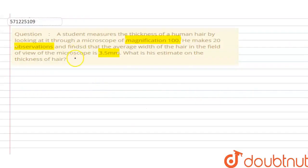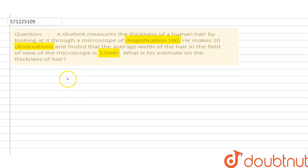Hello everyone. The question is: a student measures the thickness of a human hair by looking at it through a microscope of magnification 100. He makes 20 observations and finds that the average width of the hair in the field of the microscope is 3.5 mm. What is his estimate of the thickness of the hair?